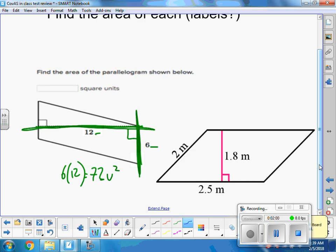Why don't you press pause and try the second one, then press play and see how we do. On this guy I'm going to do the base which is 2.5 times the height which is 1.8. 2.5 times 1.8 is 4.5 meters, and it is area so it's squared. All area is squared, perimeter has no exponent.